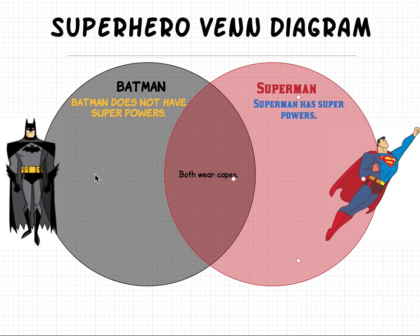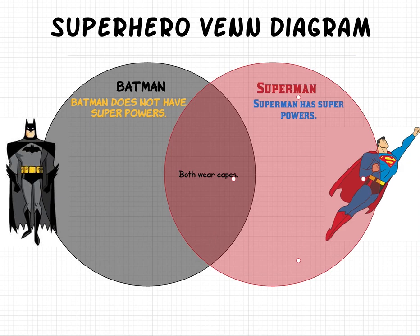If we look at the Just Batman section that's not overlapping, it says that Batman does not have superpowers. In the section that's Just Superman, it says that Superman has superpowers. And in this middle combination section, it says that both wear capes. And yes, if you look at the picture, you can see that both of them are wearing capes.